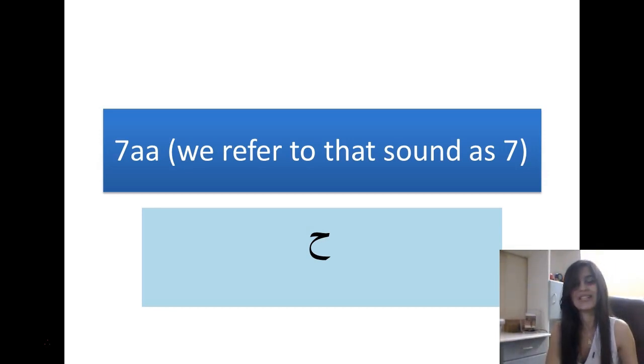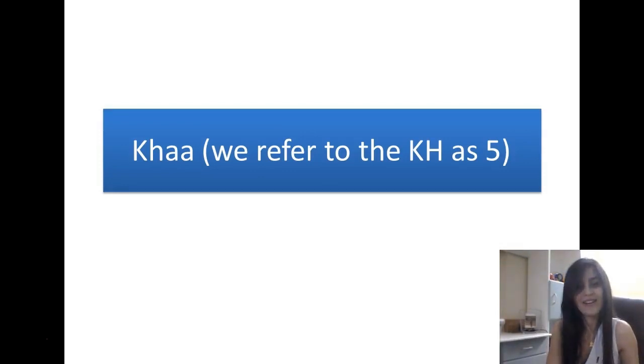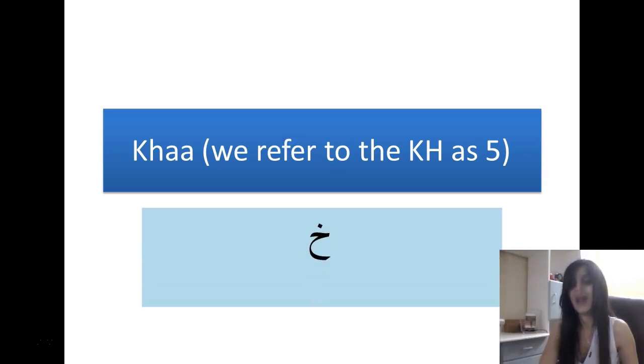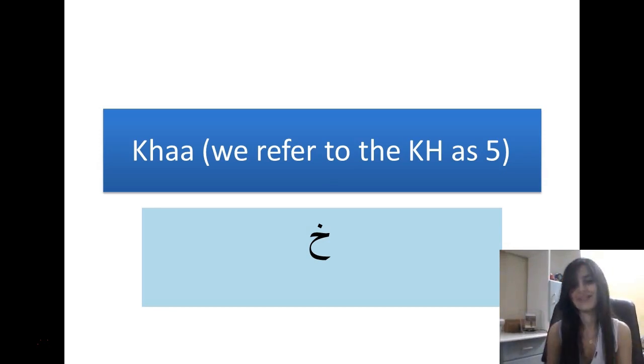Then we have the letter H, and we refer to this H letter as KH — the letter five in the English letters. So it is also a difficult one for other speakers. So it is CH. The pronunciation is CH. And this is how we write CH. This is the shape of CH in the Arabic language.